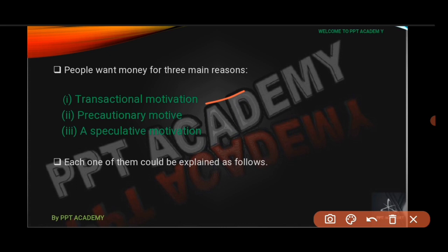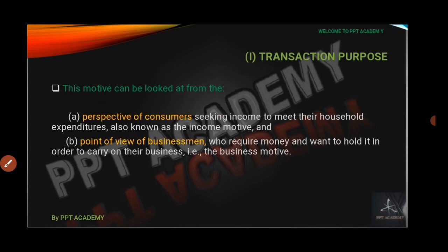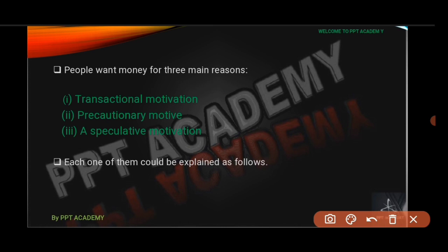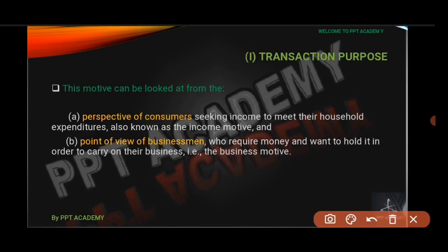The second motive is the precautionary motive. The third is the speculative motive. The transaction motive can be looked at from two major perspectives: from the perspective of the consumer and from the point of view of the businessman.